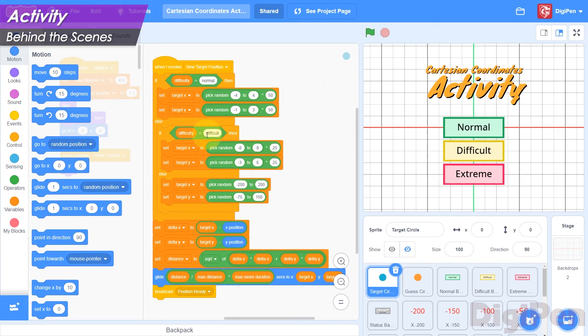Based on the difficulty, it uses a different approach to choosing the target point. After it chooses, it moves the sprite to the target location, and then sends the message that it's ready for the game to move on.